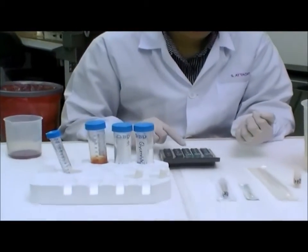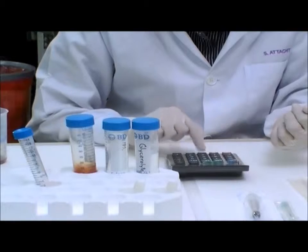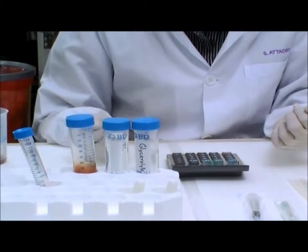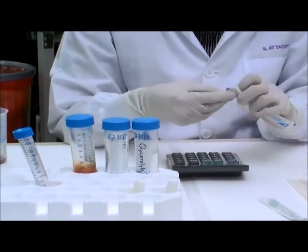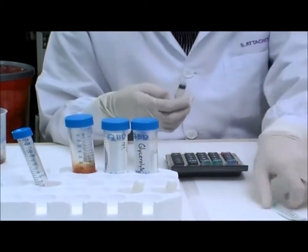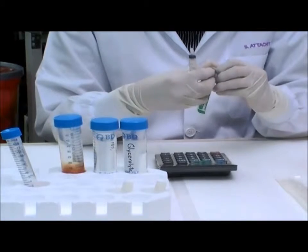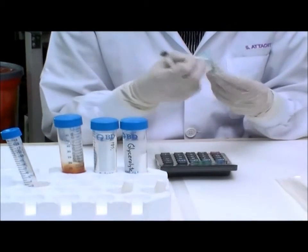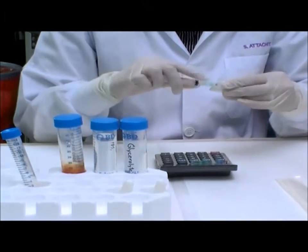During the incubation, calculate the volume of the glycerolite which is further added to the packed red cells. To do this, multiply the original volume of the packed red cells by 1.33. For example, if the original volume of the packed red cells was 1.5 milliliters, you will add 2 milliliters of glycerolite.